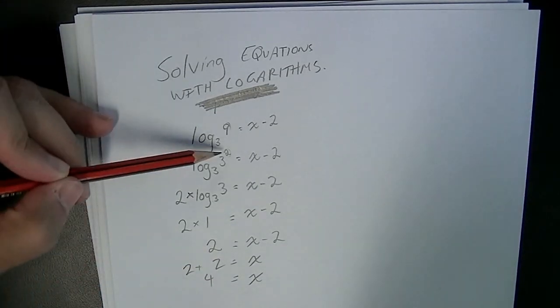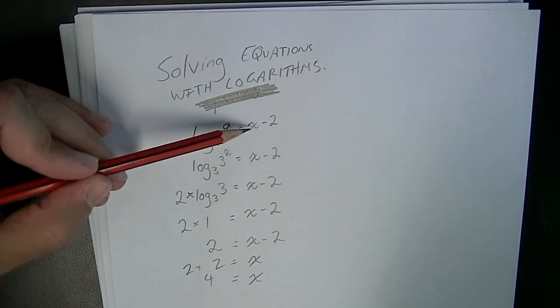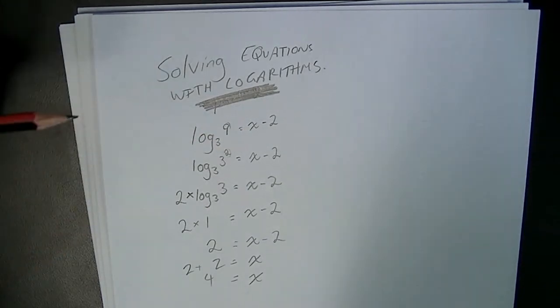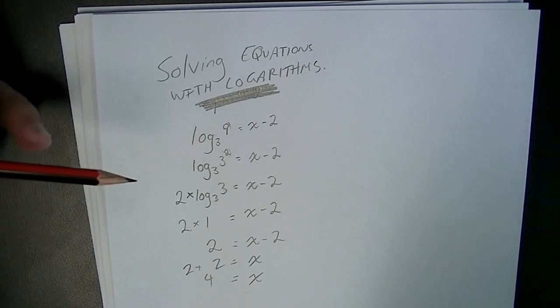So this means that log base 3 to the 9 equals 4 minus 2. That means log base 3 to the 9 equals 2, which makes sense, it works in our equation.